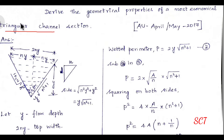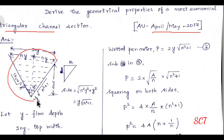Now we will see the rectangular and trapezoidal sections. We will look at the April-May 2017 exam. We will begin with the first triangular section.